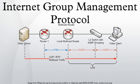IGMP operates on the network layer, just the same as other network management protocols like ICMP. The IGMP protocol is implemented on a particular host and within a router. A host requests membership to a group through its local router, while a router listens for these requests and periodically sends out subscription queries.